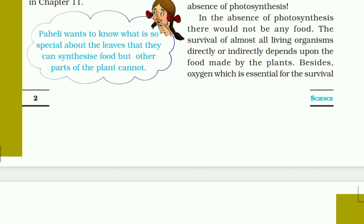In the absence of photosynthesis there would not be any food, because the survival of almost all living organisms directly or indirectly depends upon the food made by plants. Each and every organism other than plants is dependent on plants directly or indirectly.